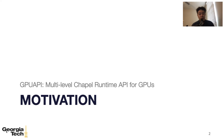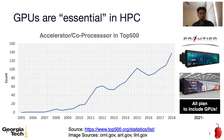Let me first talk about our motivation. What you see here is the number of accelerators in the top 500 list, and obviously, the number of GPUs is increasing. Also, some of the next-generation supercomputers such as Frontier, Alola, and Captain plan to include GPUs, which also emphasizes the importance of using GPUs in HPC.